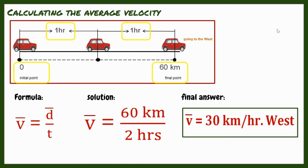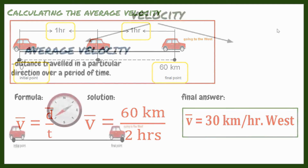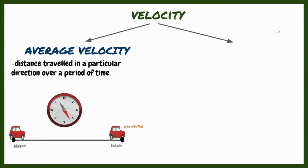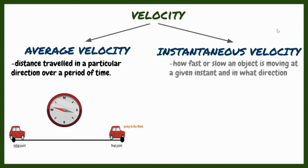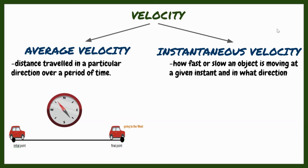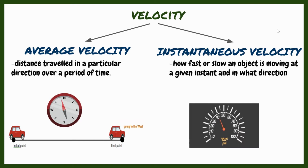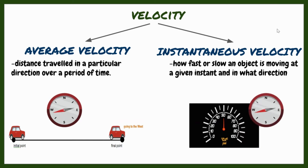If there's an average velocity, there is also instantaneous velocity. It refers to how fast or slow an object is moving at a given instant and in what direction. If you are riding a car, you can estimate it using a speedometer and a compass.